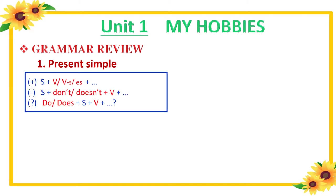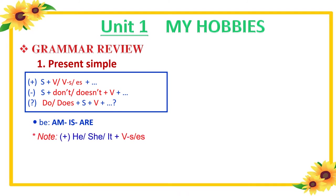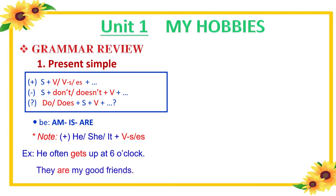The first is the Present Simple tense. Here are the forms of ordinary verbs: affirmative form — subject + verb or verb plus -s/-es; negative form — subject + don't or doesn't + verb; interrogative form — do or does + subject + verb. Here are the verbs to be of the Present Simple tense: am, is, and are. Remember, in the affirmative form, for he, she, or it, we add -s or -es to the verb. For example: he often gets up at 6 o'clock; they are my good friends.